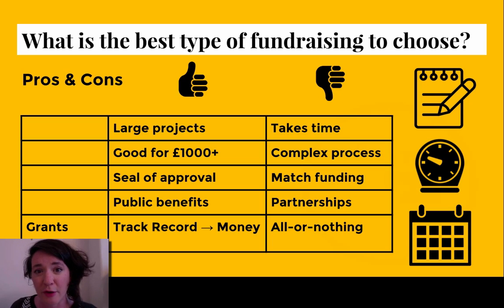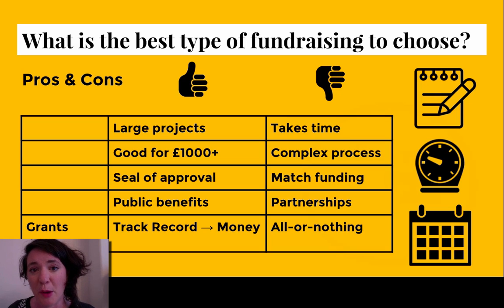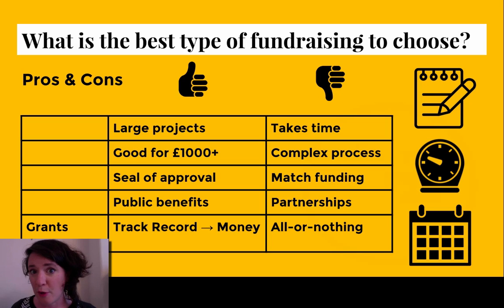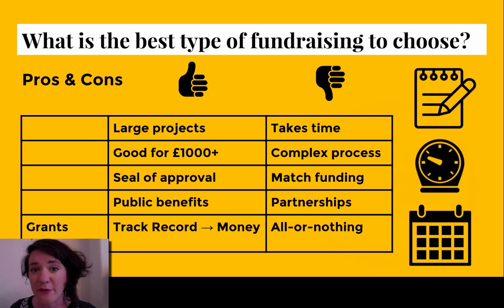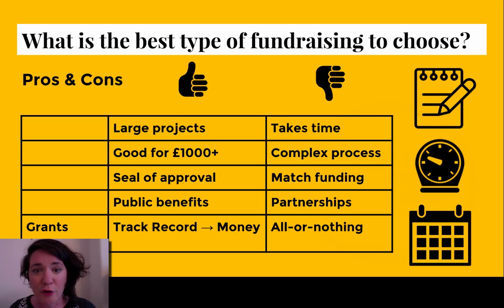Grants are usually focused on projects that have public benefits — grant funding will typically go towards something that has a wider benefit for members of the general public or for specific groups of the public. It's also a great way to turn your professional track record into money. If you're still developing your track record and haven't done many projects already, it can be more difficult to get grant funding. However, if you have started to make different projects happen, or if your community or the groups you're involved in have a track record of getting things off the ground, this is a great way of turning that track record into money to fund your project.